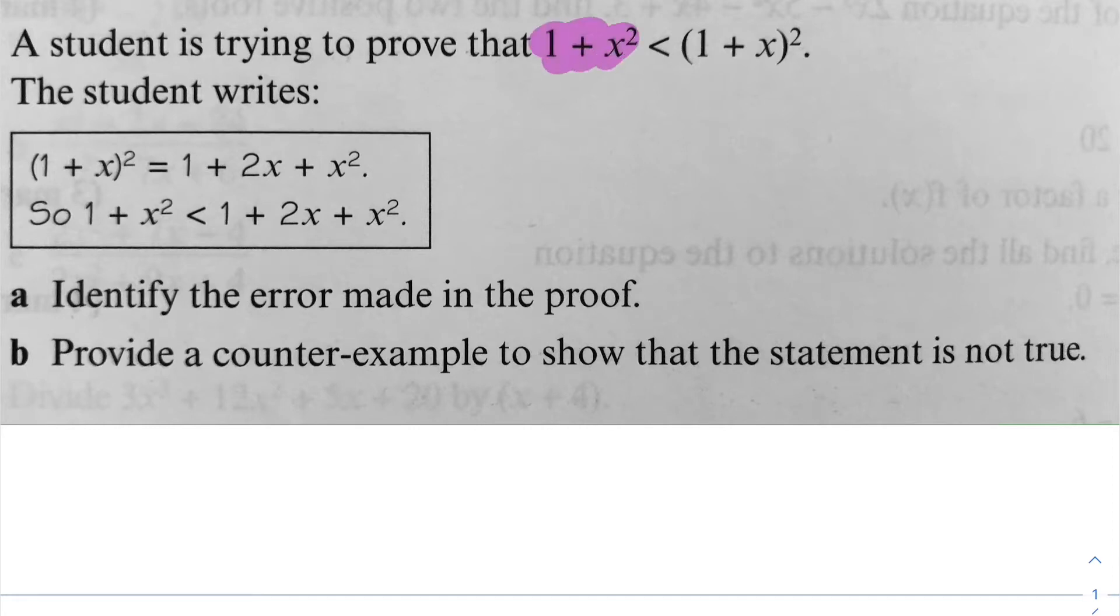The student writes: 1 plus x squared equals 1 plus 2x plus x squared once expanded. So 1 plus x squared is less than 1 plus 2x plus x squared. We're asked to identify the error made in the proof and then provide a counter-example to show that the statement is not true.